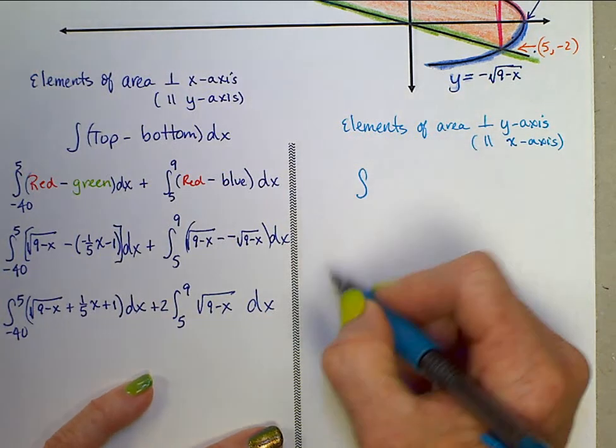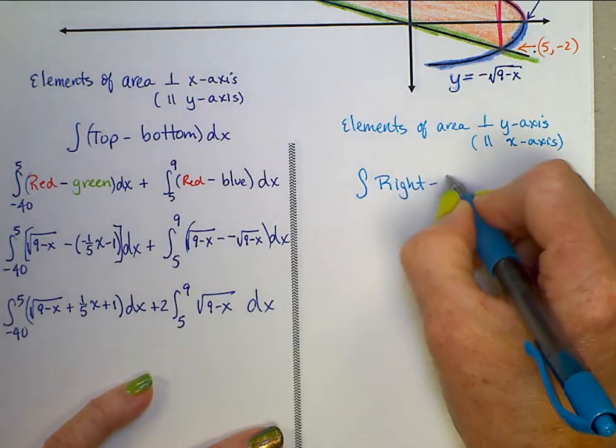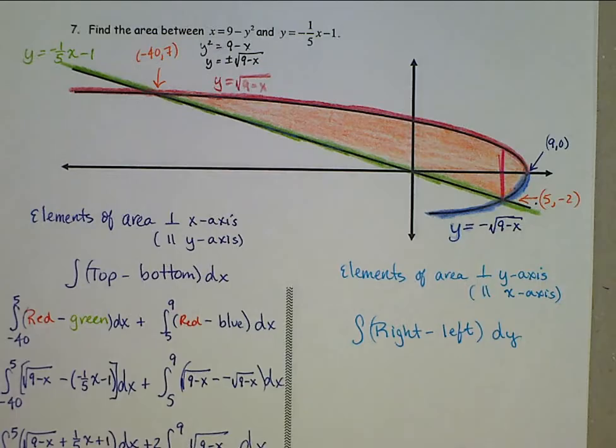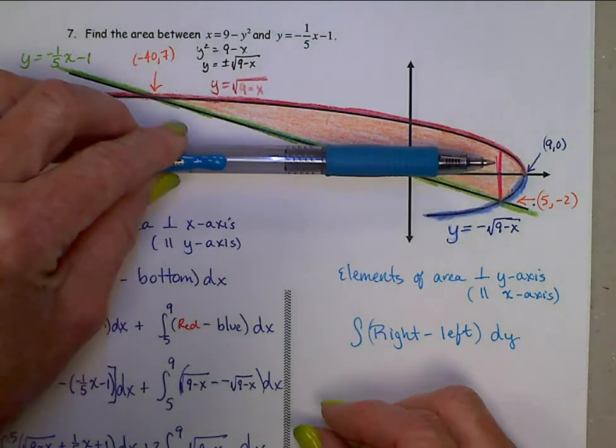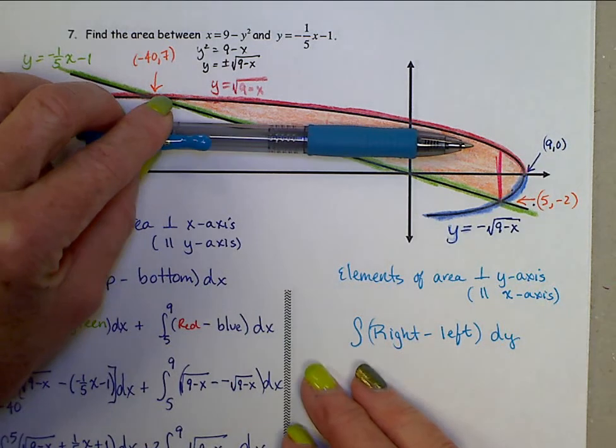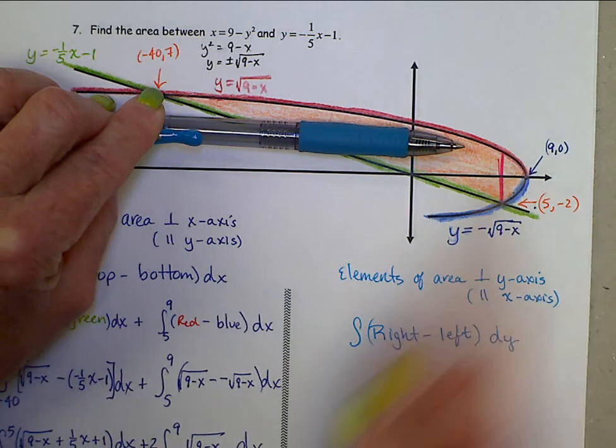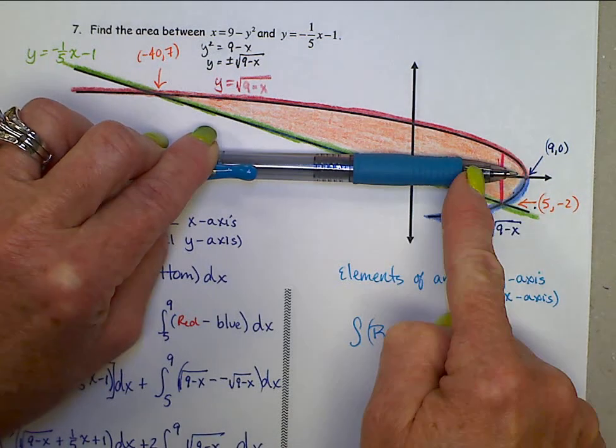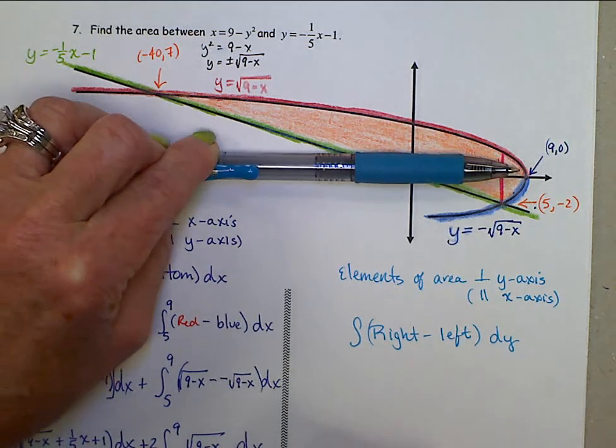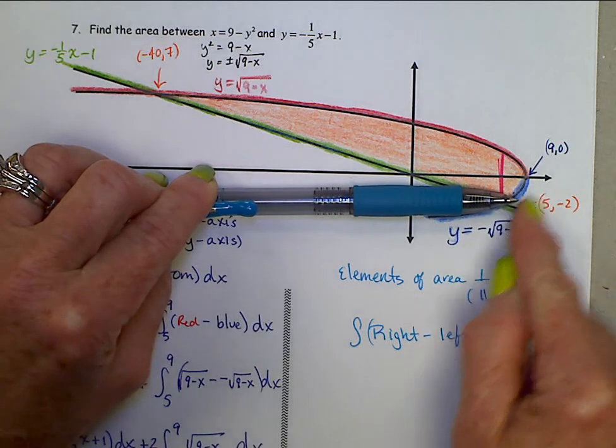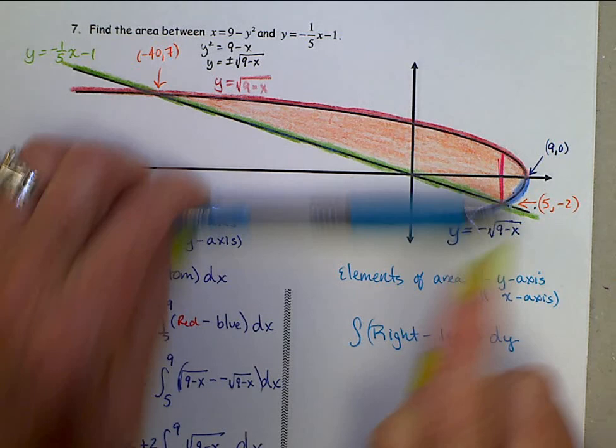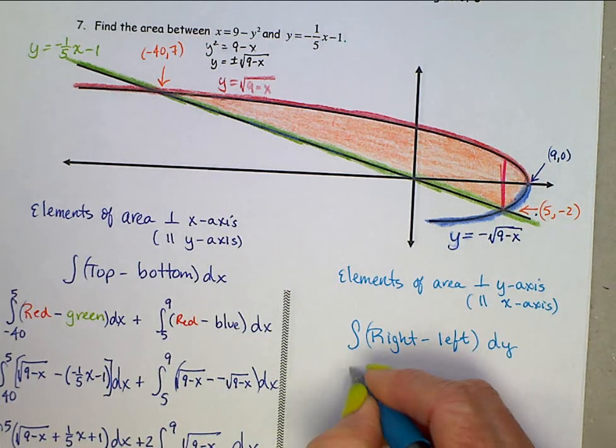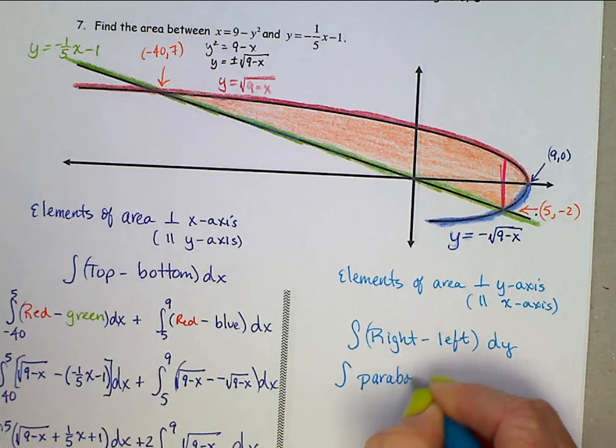That's setting up right minus left, and that will be dy. Now right minus left, forget the colors for right now. In this section right in here, the parabola is on the right, the line is on the left. Move down a little bit, parabola is still on the right side, line is on the left side. Even down here, the parabola is on the right side, the line is on the left side. So when we're looking at this, we actually don't need to separate top and bottom here because that's just one parabola. So we're looking at the parabola minus the line.